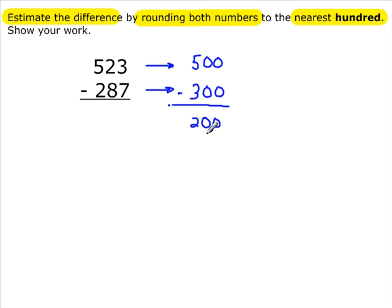The reason we do these estimations, sometimes that's all we're interested in is the estimate. And the other thing is, if we estimate the answer first and then do the subtraction, we can compare the two. And if the answer we get by doing the exact subtraction is way off from the estimate, then we know we made either an error in the estimate or more likely an error in the actual subtraction.